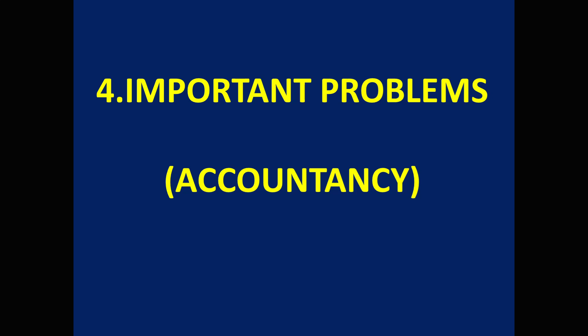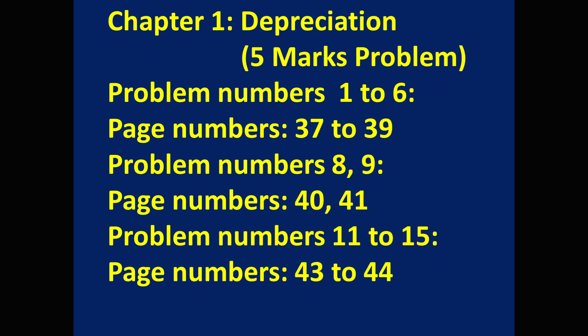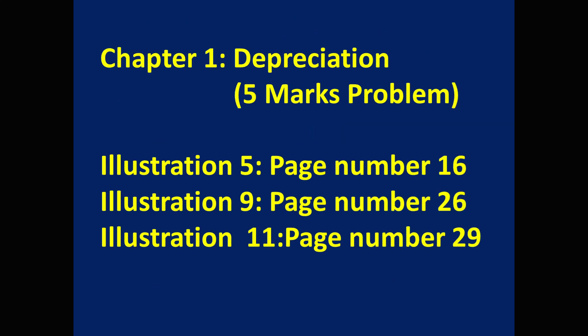Coming to important problems from accountancy part. Chapter 1: Depreciation. From this chapter one problem comes for 5 marks. Important problems are numbers 1 to 6, textbook page numbers 37 to 39; problem numbers 8 and 9, page numbers 40–41; problem numbers 11 to 15, page numbers 43–44. Illustration problems to learn: Illustration 5 page 16, Illustration 9 page 26, Illustration 11 page 29.